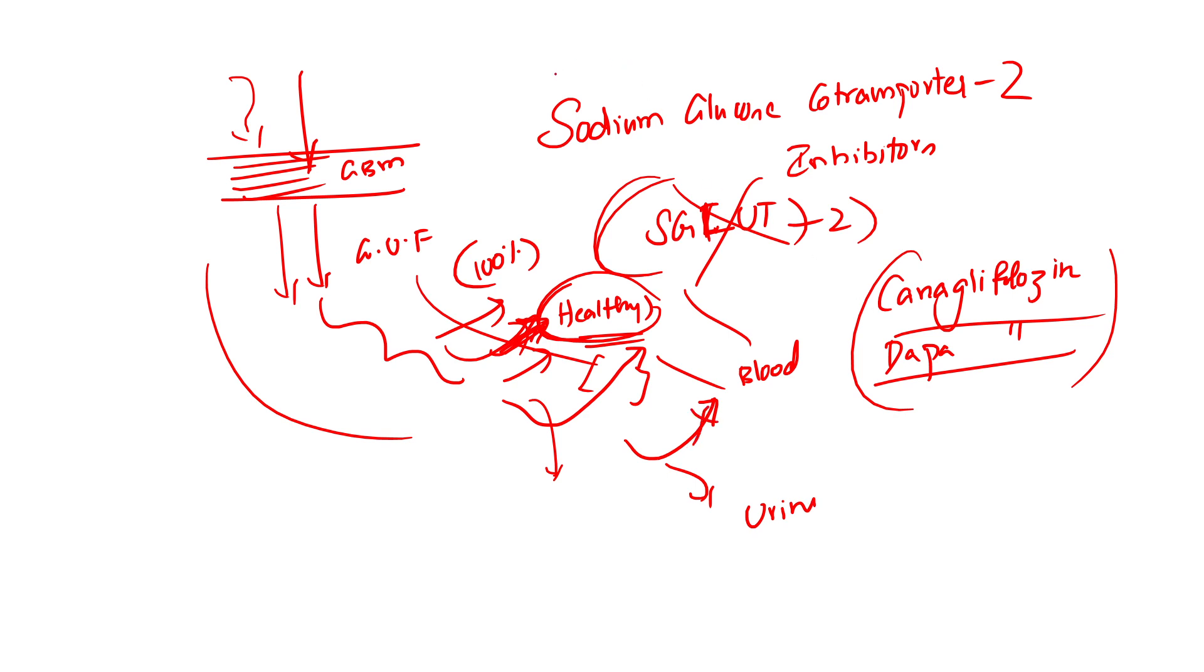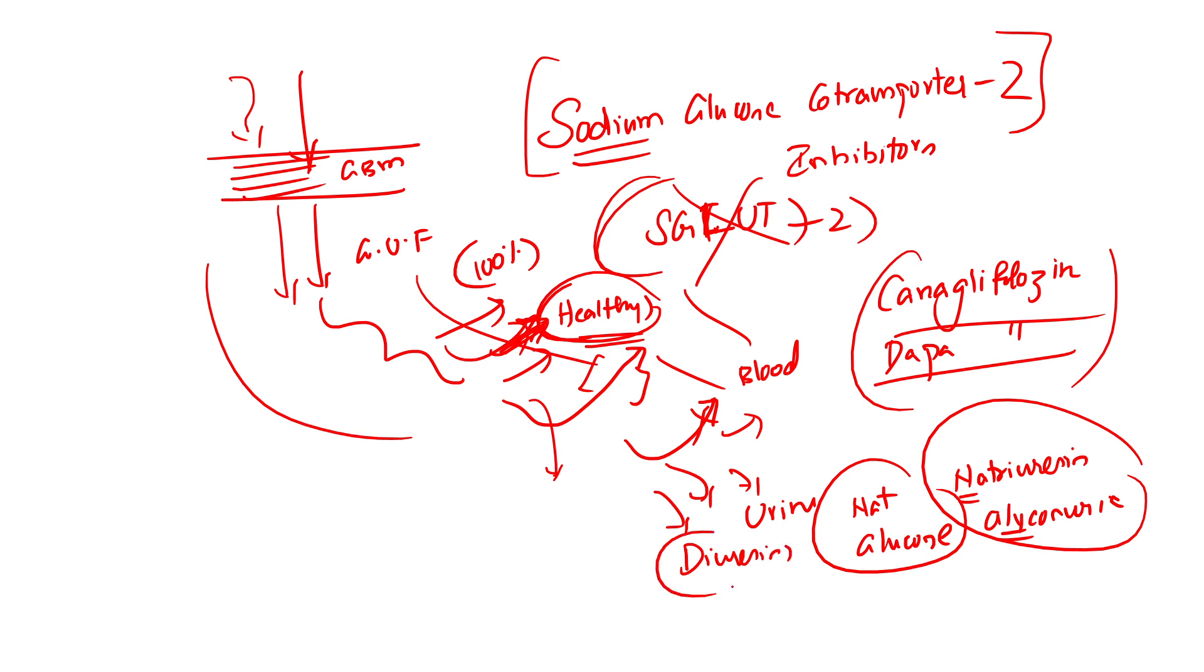And at the same time, you realize it's a co-transporter. So whenever sodium reabsorption is failing, sodium is also lost in the urine. So in the urine, you have glucose being lost and sodium also being lost. You call them natriuresis and glycosuria. And remember, these two compounds, sodium and glucose, are hygroscopic agents. Wherever they go, water will also go. So diuresis can happen, so frequent urination can be a side effect.